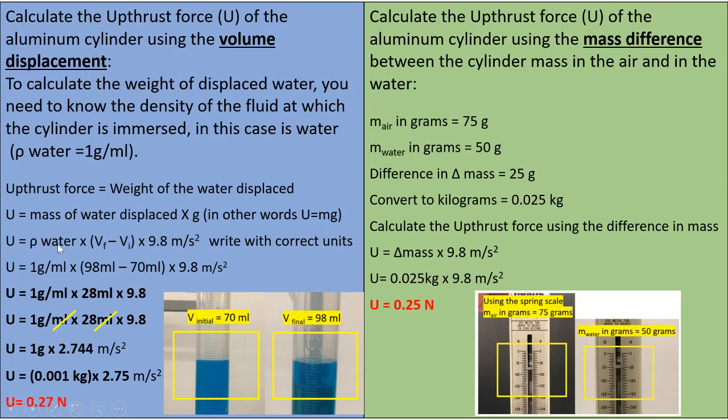We need to know the density of the water, which is 1 gram per ml, and the water displaced is the difference between both volumes. So the final volume is 98 and the initial volume is 70. 98 minus 70 is 28.